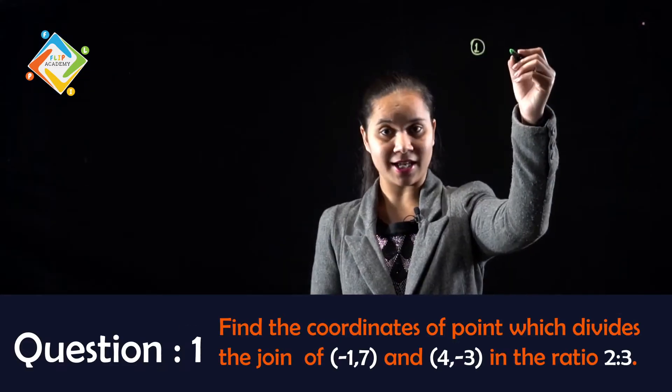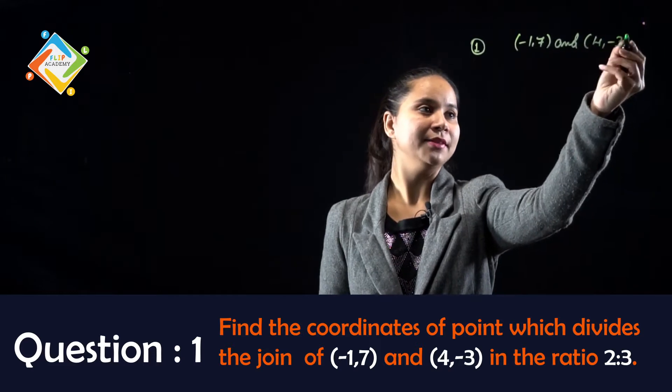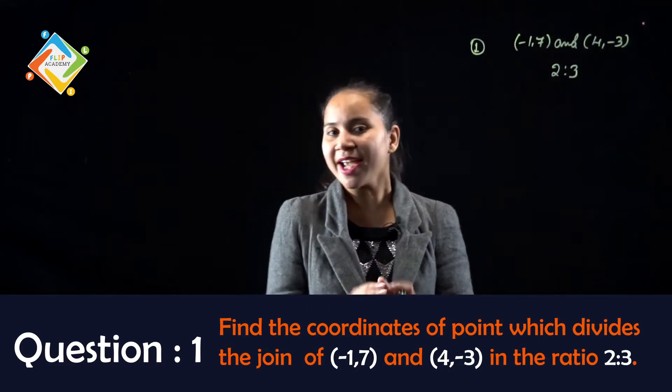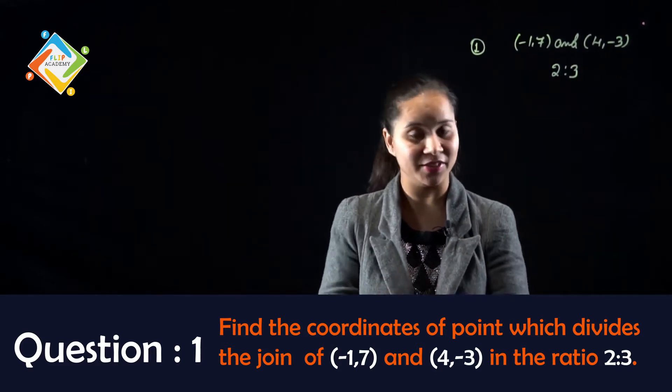So, the given coordinates are (-1,7) and (4,-3). And the ratio is 2:3. We will find out what coordinate this is. We'll use the section formula to find the coordinate of the point.